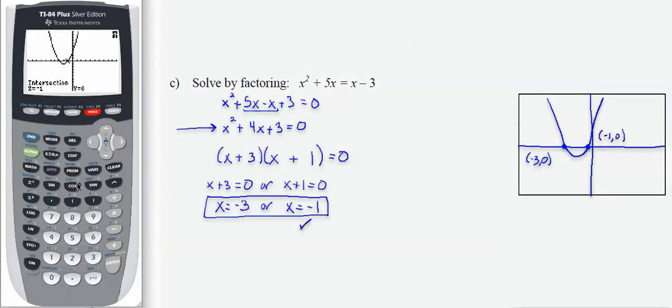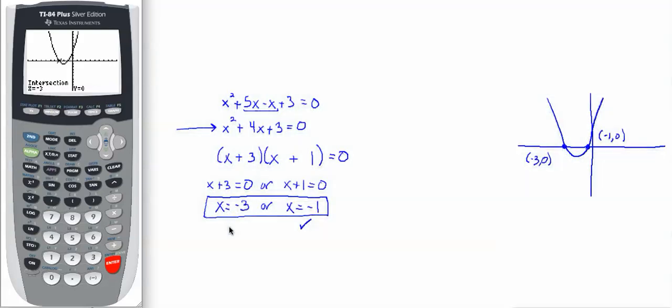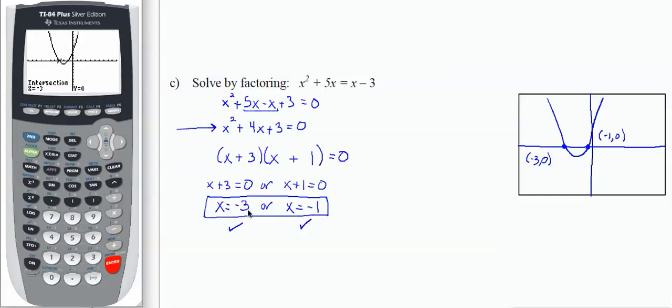Second calc 5 again. Move my cursor closer to the intersection I have not yet found. Press enter three times to achieve the intersection of negative 3, 0, verifying here and confirming the solution of x equals negative 3.